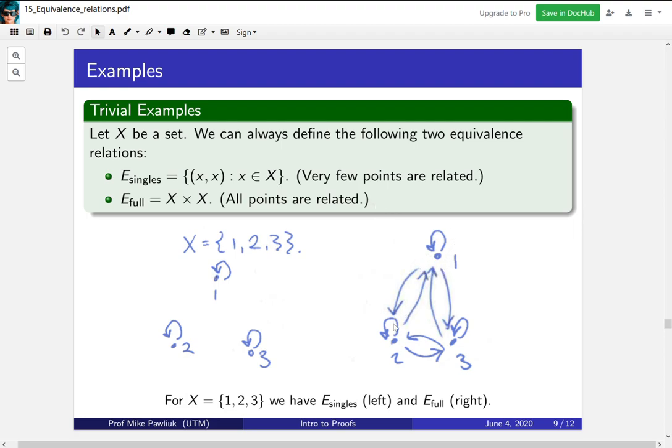Not only is one related to itself, two and three related to themselves, but also we have one three and three one and two one and one two, all of them. So this is all of the relations, this is as few as possible. You should think about why did we have to include these three loops? Which property of equivalence relations tells us that.